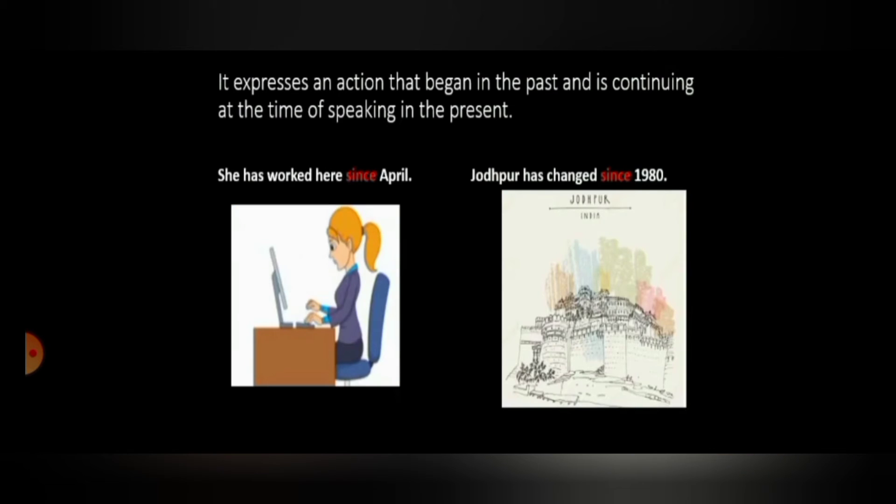The next. It expresses an action that began in the past and is continuing at the time of speaking in the present. Here, we will use a special term since in the sentence. So, let us see the example. She has worked here since April. Jodhpur has changed since 1980.